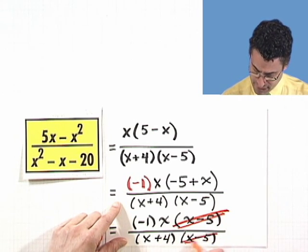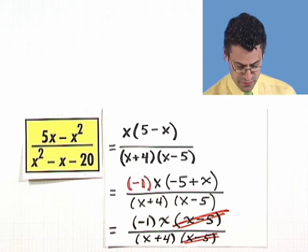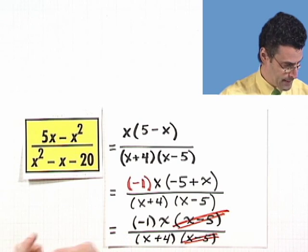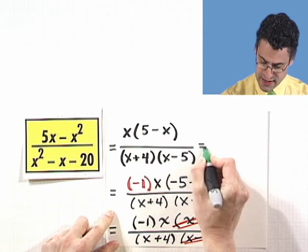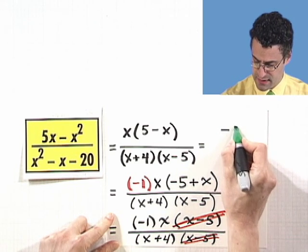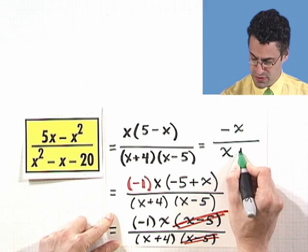And so what am I left with? I'm left with just the numerator of negative x, negative 1 times x, which is negative x, divided by x plus 4.